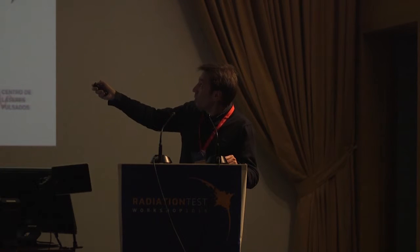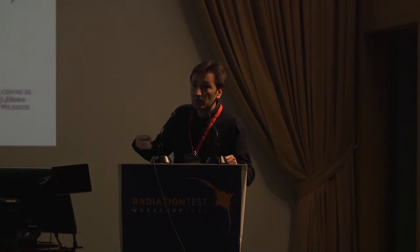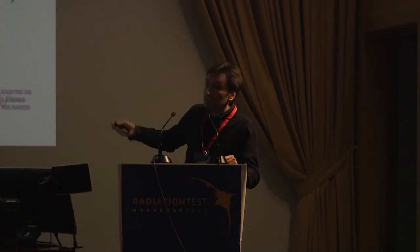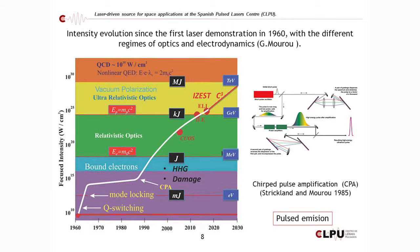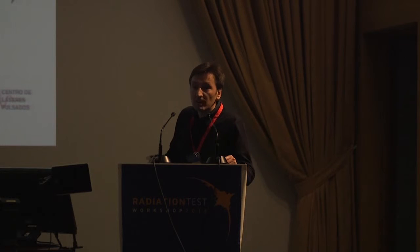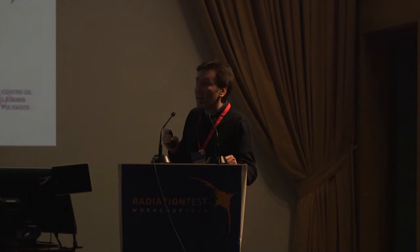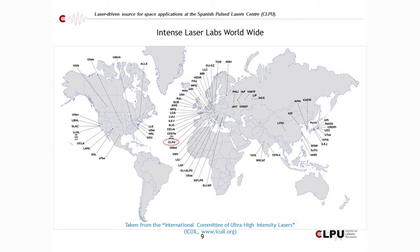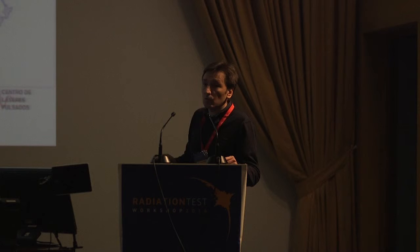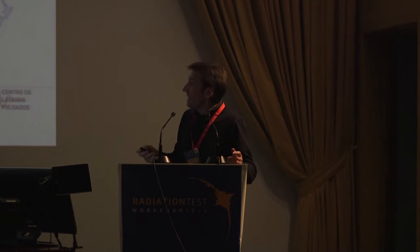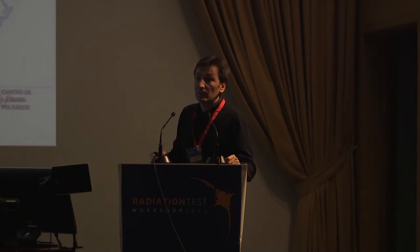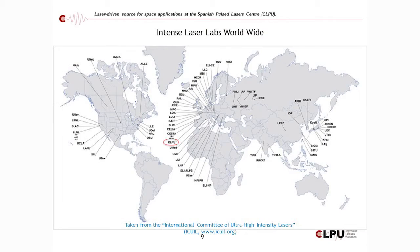In blue, you can see the energies of the electrons that are going to be produced — we are right now in the GeV region, and it is expected to grow significantly in the coming years. I also want to stress that the CPA technology is based on pulse emission, so the lasers are pulsed, and we are speaking about really short pulses.